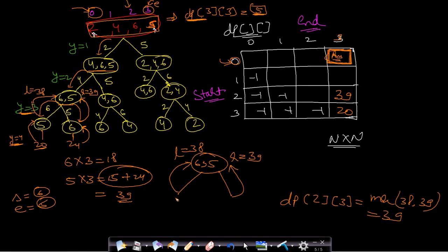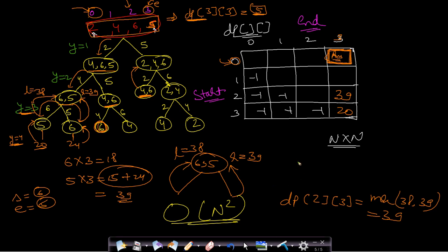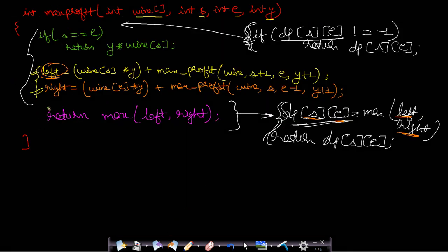My goal was to explain how and why the DP approach works. With a larger example, many more repeated subproblems appear, and skipping their recomputation reduces the time complexity to O(n²). This slightly different kind of DP is called memoization: it uses the recursive approach but saves solutions in the DP table — the only difference from pure backtracking.